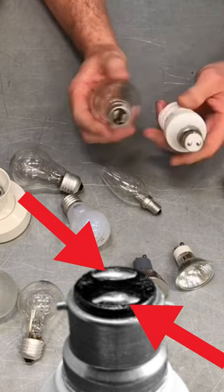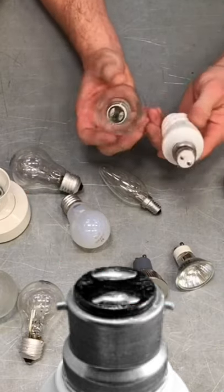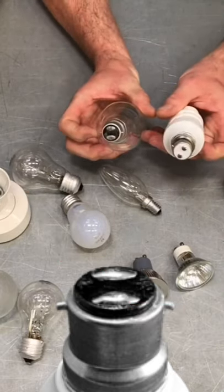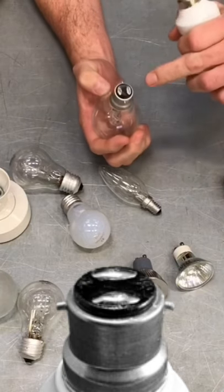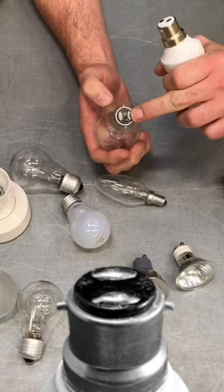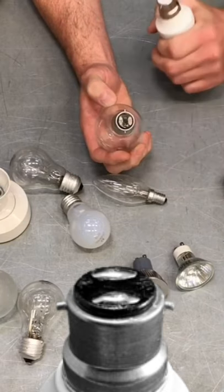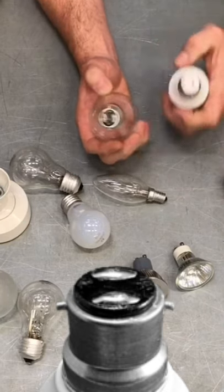...two points of contact, this one here and this one here. Exactly the same principle behind it is that they have what we call no polarity. So in other words, it doesn't matter which one of these contacts is connected to the line conductor and which one of these is connected to the neutral conductor. And that's the same...